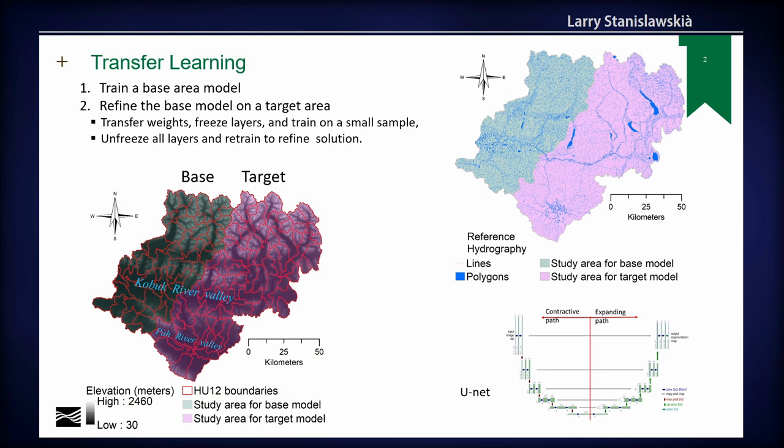You freeze those layers and train it, then unfreeze all the layers and reduce your learning rate and retrain to refine the detail information to those training data. The basic idea is that you're going to be able to largely reduce the amount of training data and processing time that you need to predict features for larger areas.